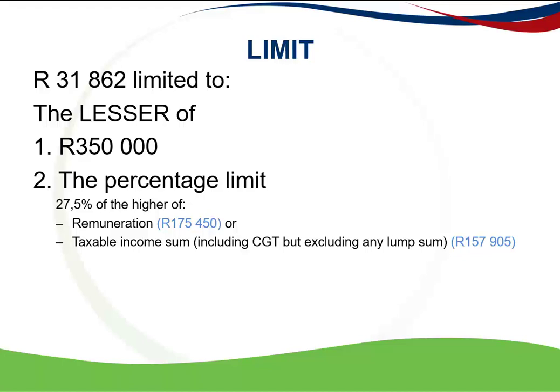The second part of the percentage limit requires us to look at taxable income including capital gains but excluding any lump sums, which in this question was R157,905. We compare remuneration of R175,450 with taxable income of R157,905 — remuneration is the higher — and we calculate 27.5% of R175,450, which gives us the second limit of R48,249.